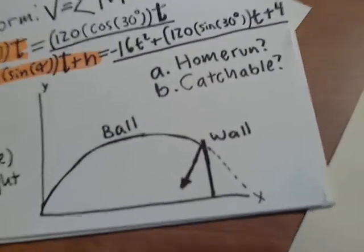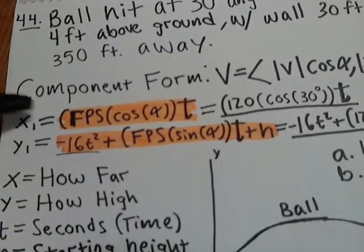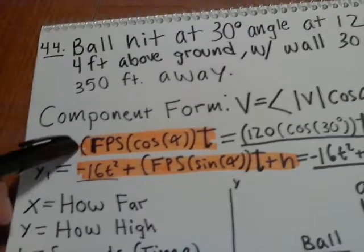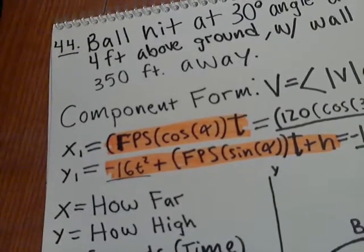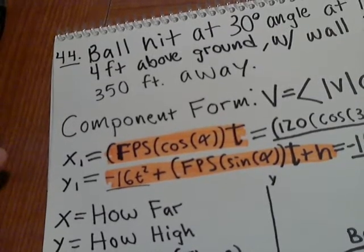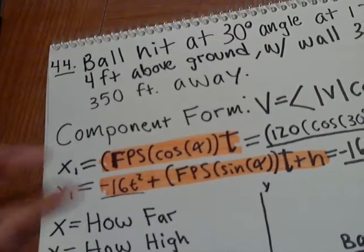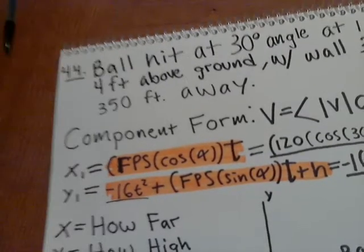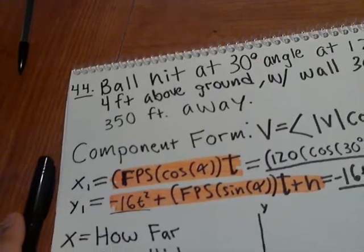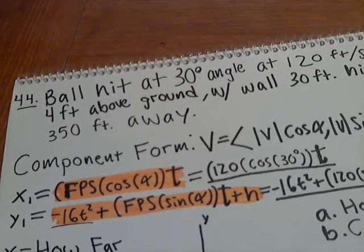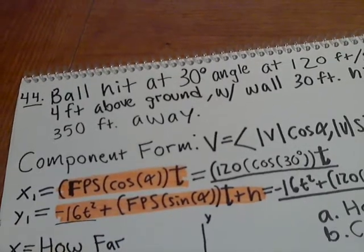So I would say it's pretty catchable. Basically what I want you guys to take away from this is these two equations that help you graph everything you need to figure out if the ball goes over a wall. This gives you the graph you're looking for of the ball movement. So yeah, there's problem 44. Nothing much else to explain. Thanks for watching.